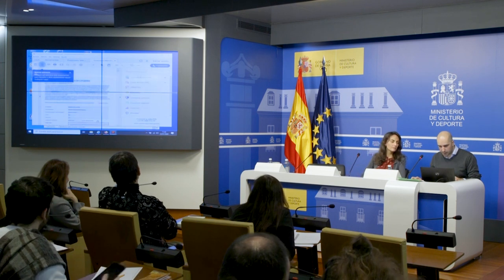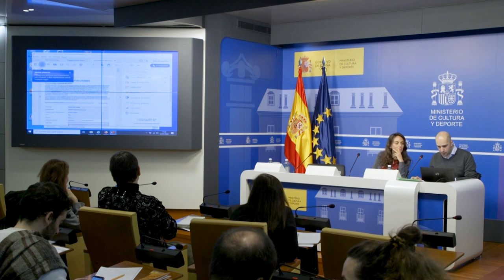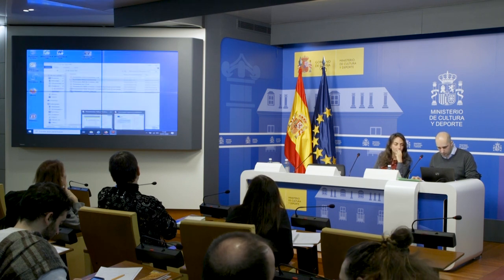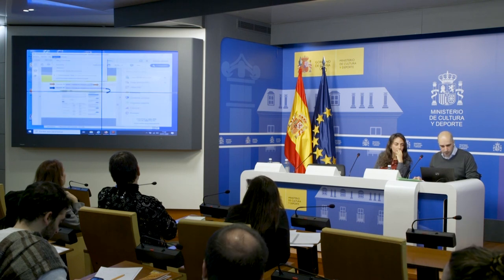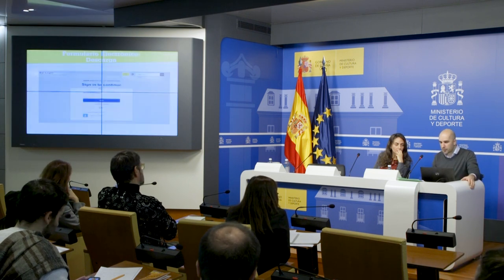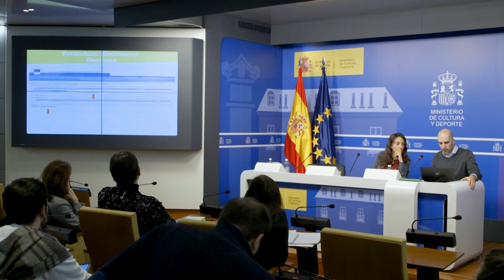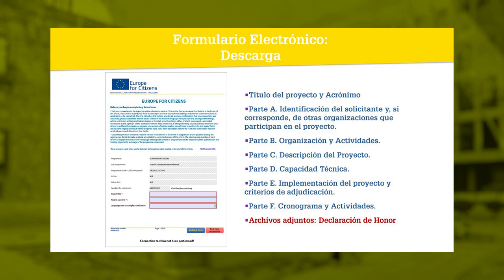Let's go to the presentation to explain what the form is composed of. We'll explain the process in case the connection wasn't working well. The electronic form will have a series of fields — it's all specified. Basically a standard project structure: description of the organization, what activities it carries out, project description, technical capacity to implement it — both yours and your partners' — how you'll implement it, the award criteria, whether your project aligns with program objectives, the timeline and activities, and finally the annexes.